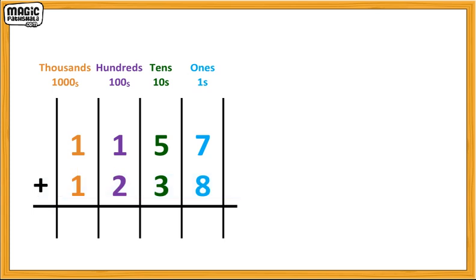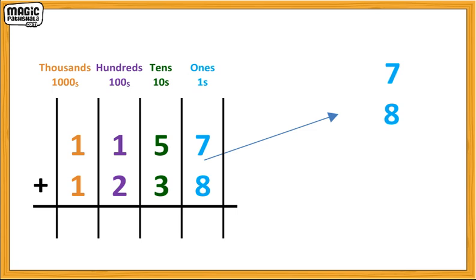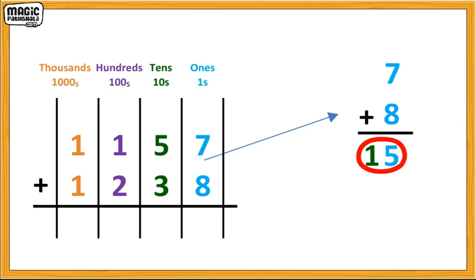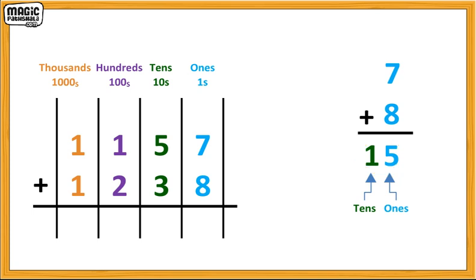Now that the numbers are in the correct columns, let's add. We are going to start in the ones column and add seven plus eight. Seven plus eight is equal to fifteen, which means five ones and one ten. So we are going to put five in the ones column and carry over the one to the tens column.